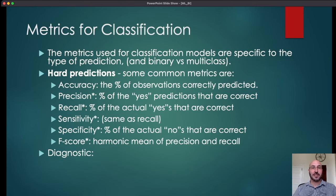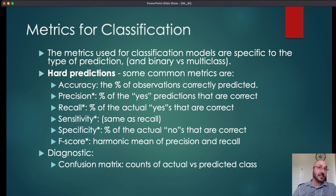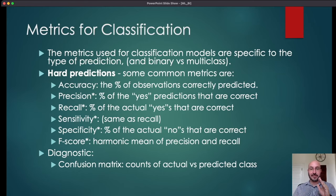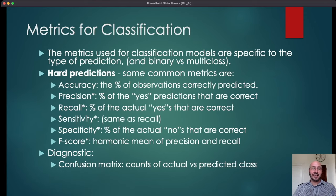In addition to metrics, there's something I call a diagnostic — something you use to assess your model's performance without reducing it to a single number. A common diagnostic in classification for hard predictions is the confusion matrix. This shows the counts of all times you predicted a particular value versus what the actual value was. Numbers on the diagonal mean you got the answer right; off-diagonal entries mean you made a mistake — for example, you thought it was a cat but it was actually a hamster.